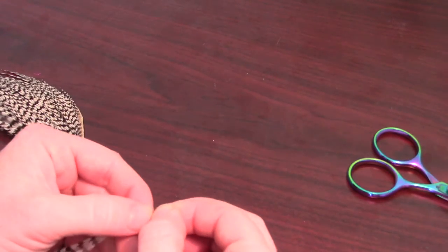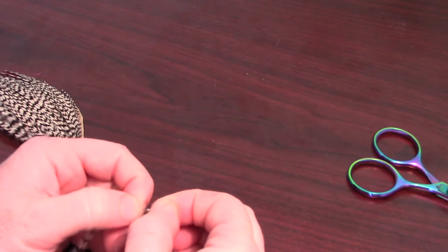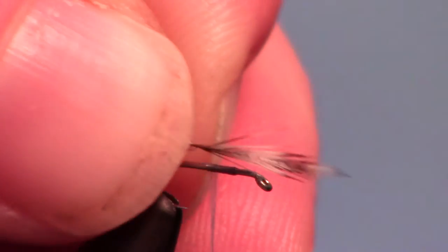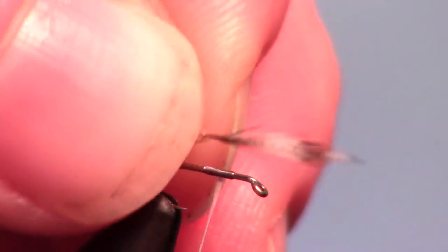Pinch just the tips and pull back the rest of the fibers. Make sure the tips are about the length of the hook shank, then tie them in facing forward.